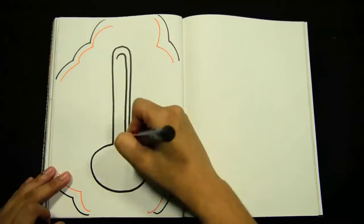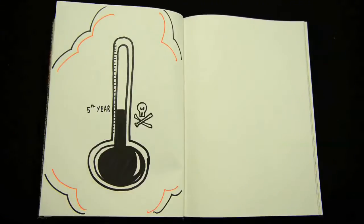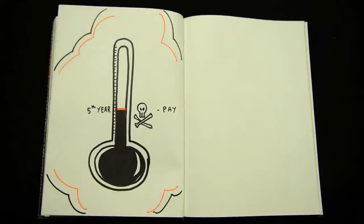Unlike a single premium policy, if a policyholder dies in the fifth year, they would have only paid the premiums for five years.